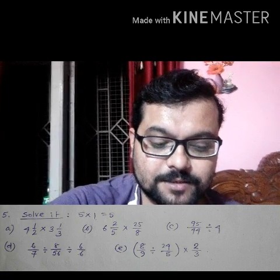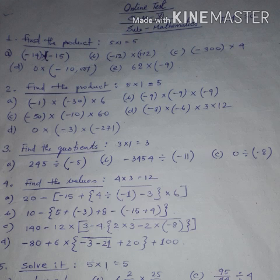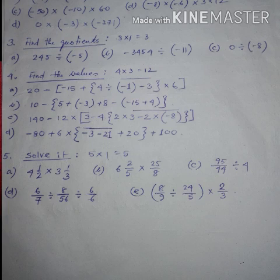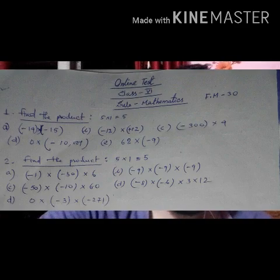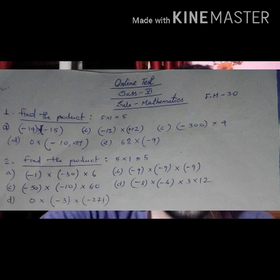First question: find the product — that is a 5-marks question. The problems are: minus 14 multiplied by minus 15, then minus 12 multiplied by plus 12, then minus 300 multiplied by 4, then 0 multiplied by 1001, then 62 multiplied by minus 9.